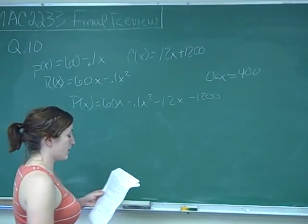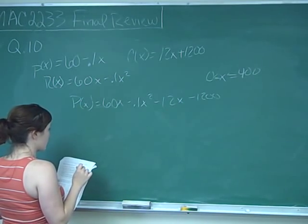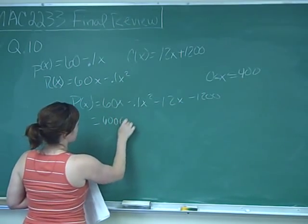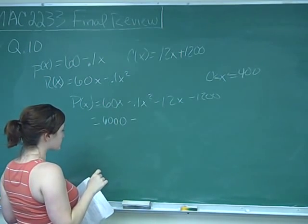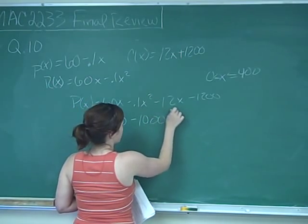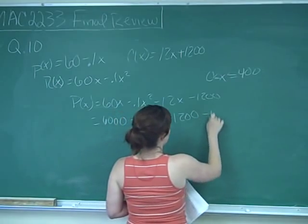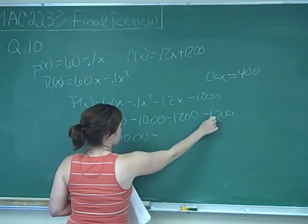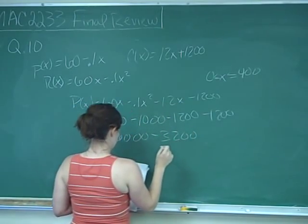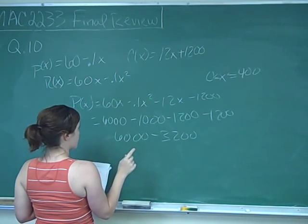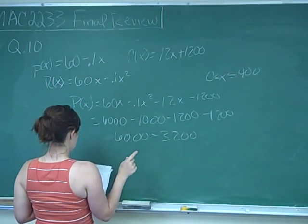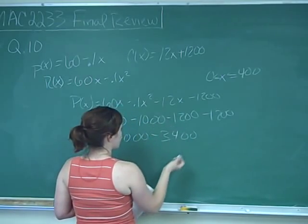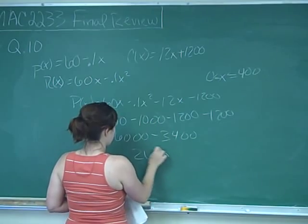For statement A to be true, 100 items would have to give us $2,600. Plugging in 100: we get 6,000 minus 1,000 minus 1,200 minus 1,200. That gives us 6,000 minus 2,400, which is 2,600. So statement A is true.